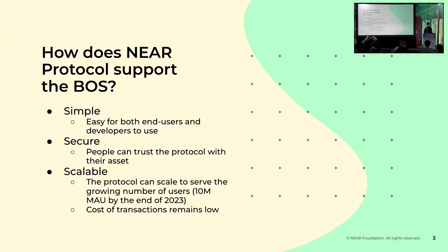In this talk specifically, I want to focus on how the Near protocol supports the BOSS. As one of the core fundamental components of the blockchain operating system, the Near protocol has defining features that make it a very good compute layer. The most important is probably simplicity — meaning it is easy for both end users and developers to use and interact with the blockchain. Because without building a protocol that's easy for end users and developers, everything else doesn't matter.